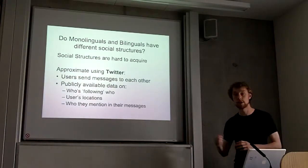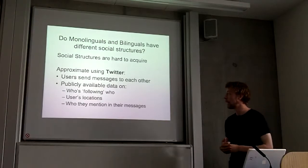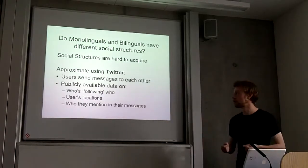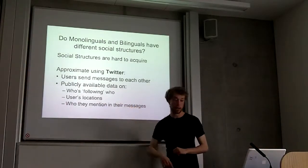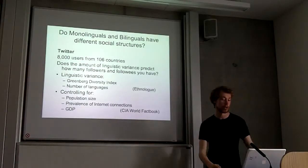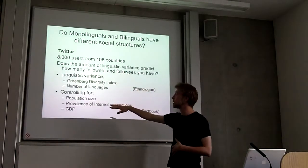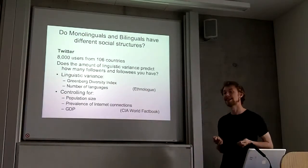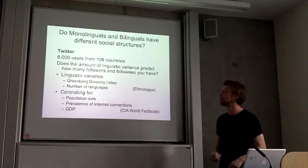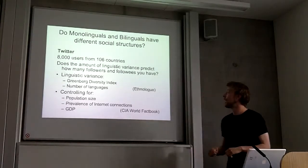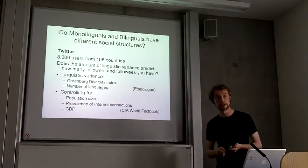I've been looking at this using Twitter. Twitter is a social networking site where you can post messages publicly and privately, you can follow people — listen to people essentially — and people can follow you. There's publicly available information on who's following whom and where people live, in terms of countries. So what I did was I got a sample of users from about 106 countries, and I tried to predict the number of followers and followees from the amount of linguistic variance in that country.